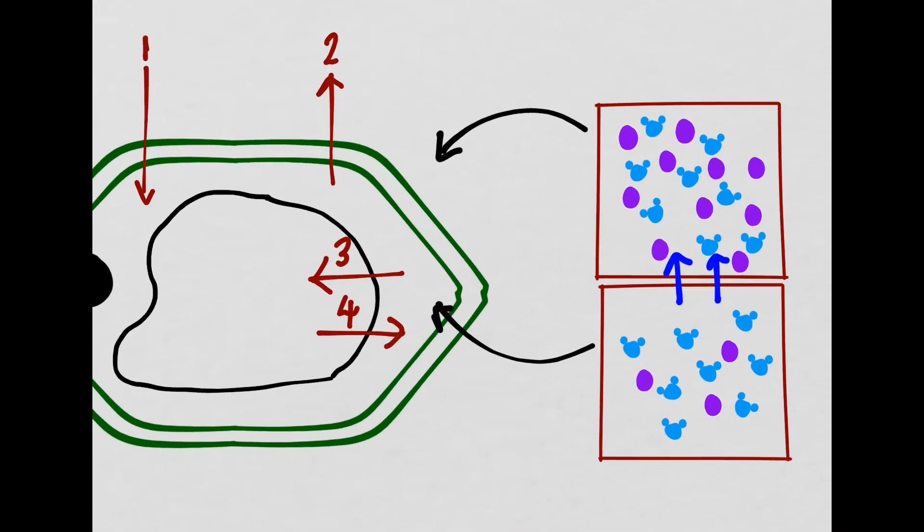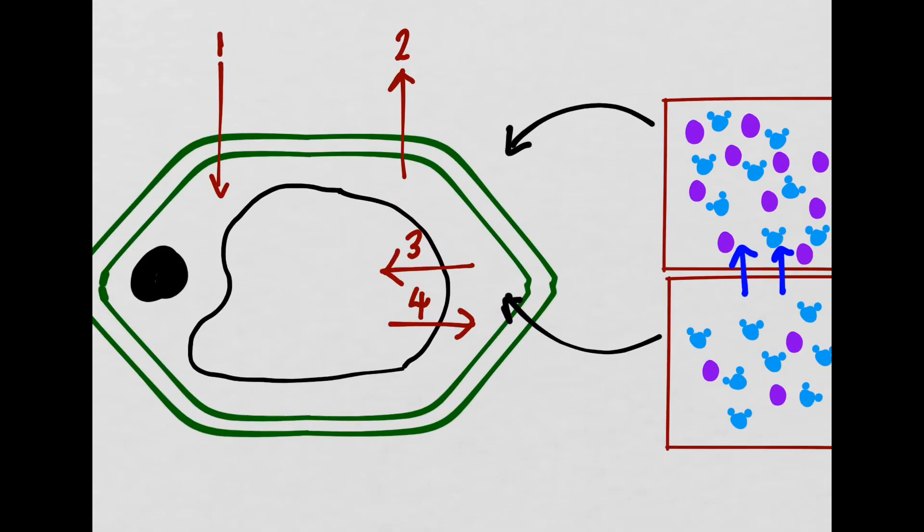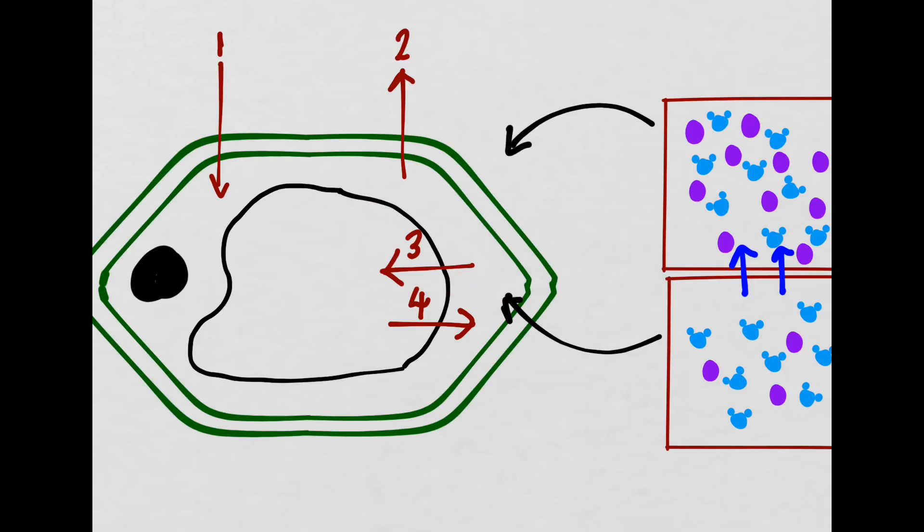And now we also have to assess three and four which represent the internal vacuole as opposed to the surrounding cytoplasm.